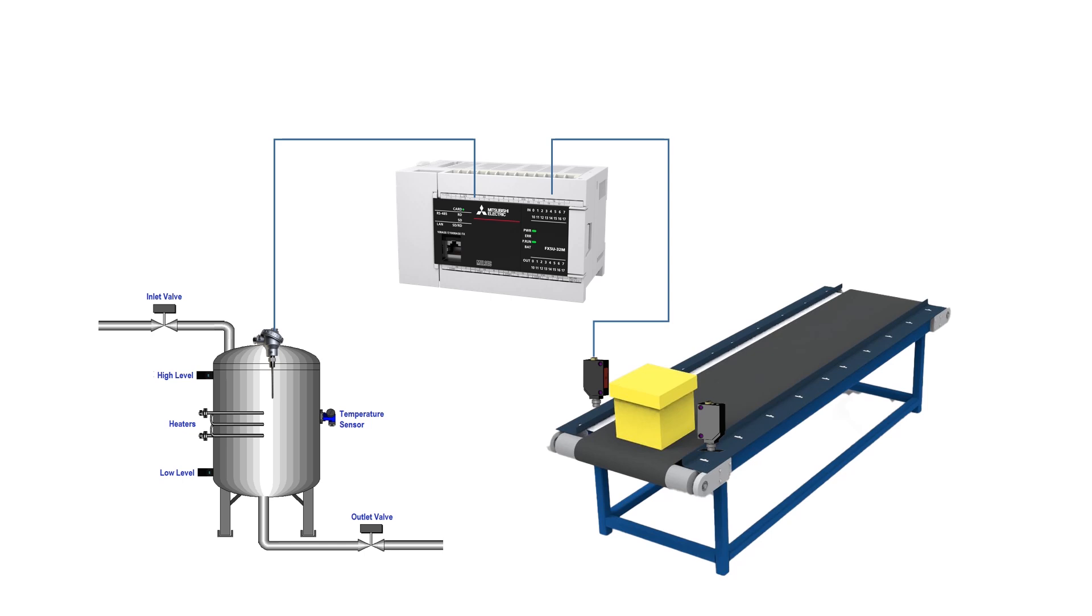For example, consider monitoring the temperature in a tank. Here, an RTD sensor is used. Let's check out the signal type it sends. It typically has a range of values, making it an analog signal.